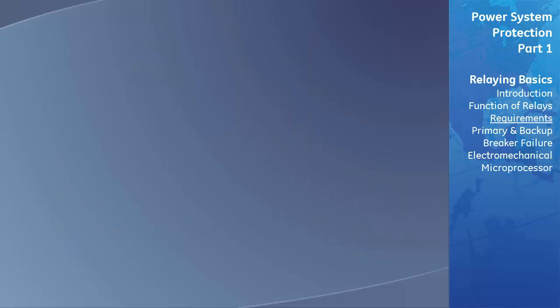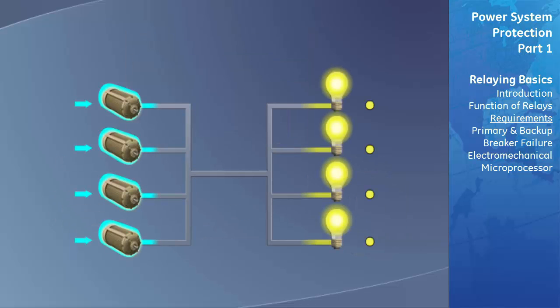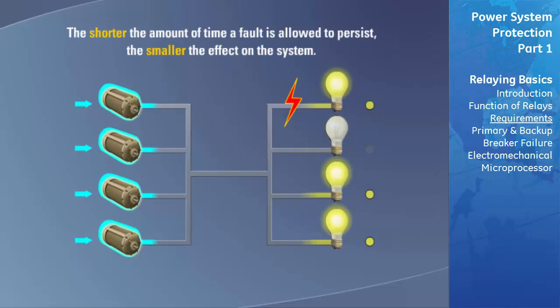The speed of operation also has a direct effect on the general stability of the power system. During a short circuit fault, the rest of the power system can transmit less power because the various sources of generation tend to go out of synchronism. The shorter amount of time a fault is allowed to persist, the smaller its effect is on synchronism or stability of the system.